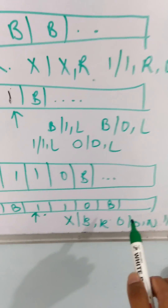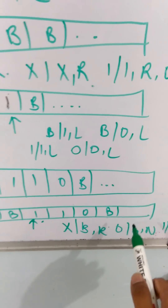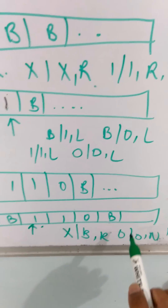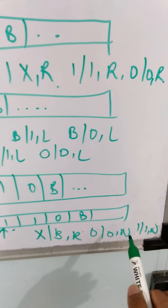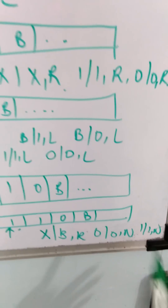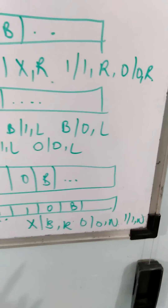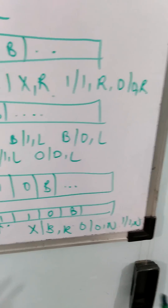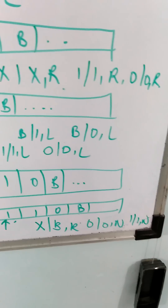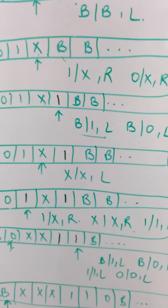If the character is 0, we will replace it with 0 and stay neutral — we will not move anywhere. And if it is 1, then we will keep it as it is. So this is how it works.